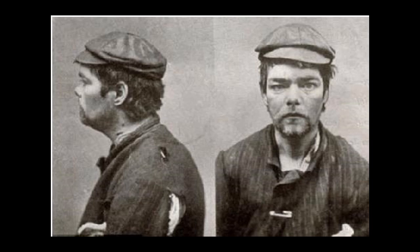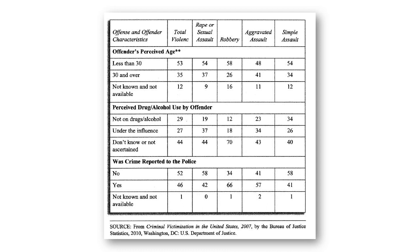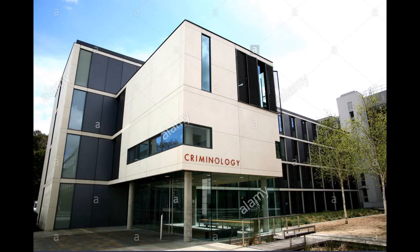People naturally would have feared people who fit this profile before crime statistics became available. But the availability of reliable statistics meant that the sense that there are patterns or regularities in criminal behavior could now be confirmed by much stronger evidence than personal experience. And if something has a pattern, it can be explained. Criminology was born.